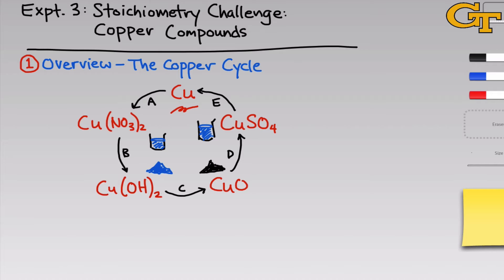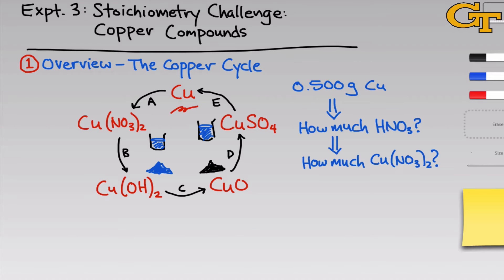Throughout this experiment, we'll be interested in questions of stoichiometry. For example, if we start with 0.5 grams of copper wire, how much nitric acid do we need to fully react it? We may also be interested in amounts of products — how much copper 2 nitrate can we expect if all of that 0.5 grams of copper metal is fully reacted? The tools of stoichiometry, specifically molar mass and molar ratios, are going to be really important for doing these calculations properly.